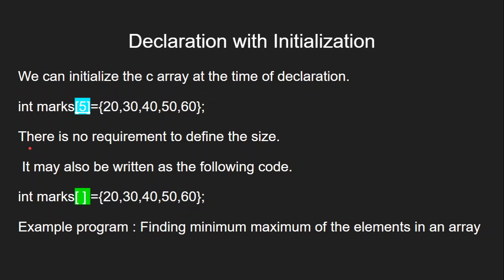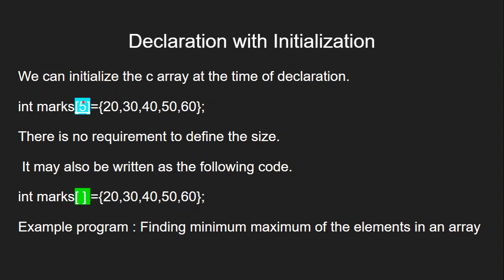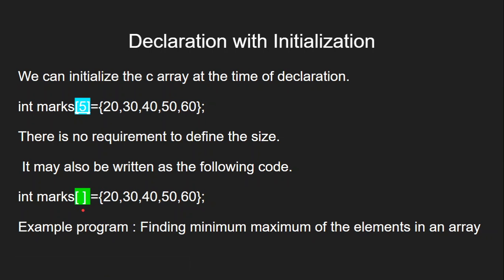There is also another way to declare and initialize an array: you write int marks[] with empty brackets and then provide the elements. The difference shown by different colors is that in the first form the size is mentioned, whereas here the size is not mentioned. Even if the size is not mentioned, it is automatically fixed based on the number of elements provided. This is another way of declaring the array during declaration itself. An example for a one-dimensional array is finding the minimum and maximum number in an array, which is a good example of this concept.